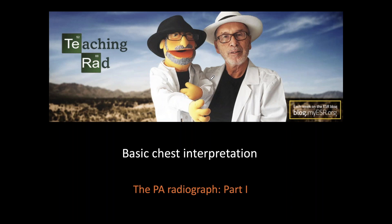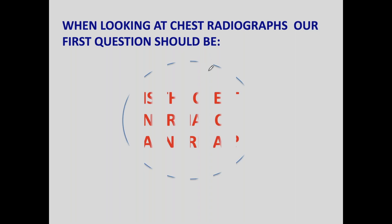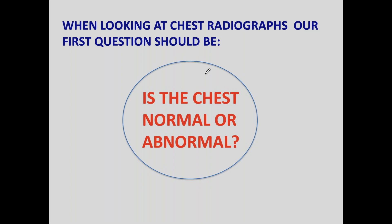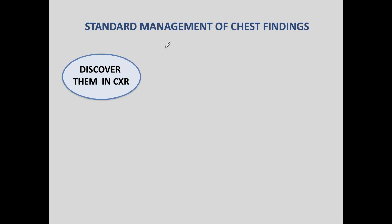Today we are going to start with the PA chest radiograph, the first part of the lecture. It's important to know that when looking at the chest radiograph initially, our first question should always be whether the chest is normal or abnormal. If the chest is normal, our mission is finished. If the chest is abnormal, then we have to do some investigation of the chest finding.